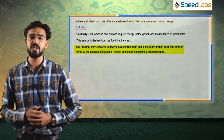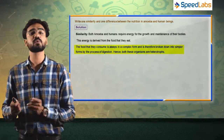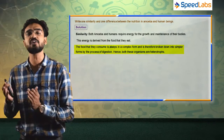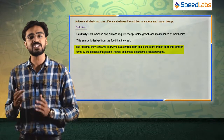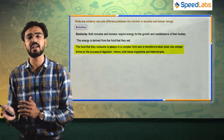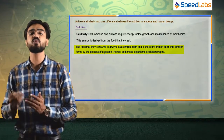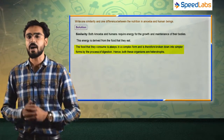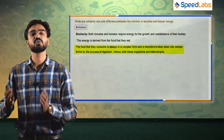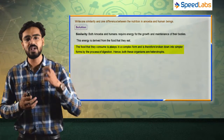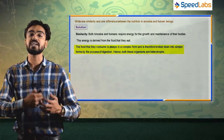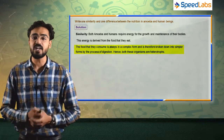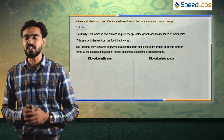The complex food is broken down into simpler forms by the process of digestion. Hence, both these organisms are heterotrophs — heterotrophs are organisms that do not make their own food but take food from outside, which is already prepared. So both amoeba and humans take food in complex form, which further needs to be digested. This is the similarity between them.